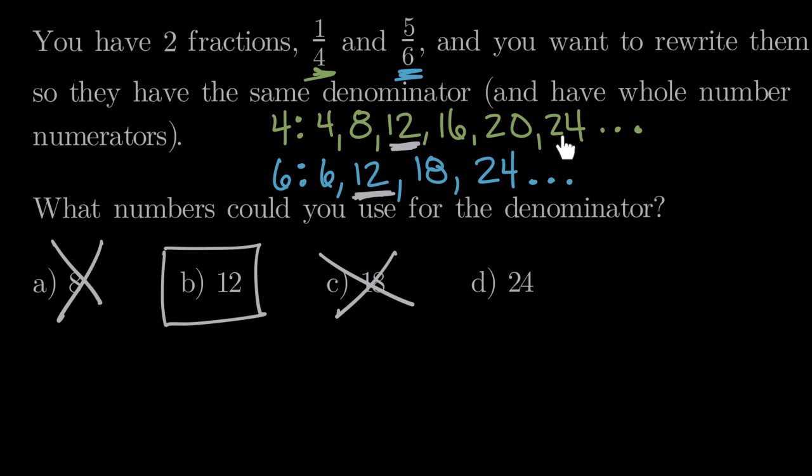And 24, you may remember, was the last number we wrote on both of them. So yes, 24 could be a denominator for fourths and sixths. So we could use either 12 or 24. And there's a lot more numbers we could use, too, as common denominators. But from these choices, we could use 12 or 24 as a common denominator for fourths and sixths.